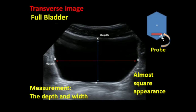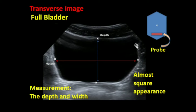This is the image with the probe lying in the supra-pubic region — this is a transverse image. The bladder is full and appears like a square. In this image, we are measuring the width from this point to this point, and the depth from anterior to posterior, or from the near to the far regions.